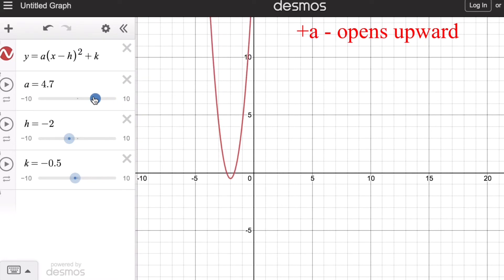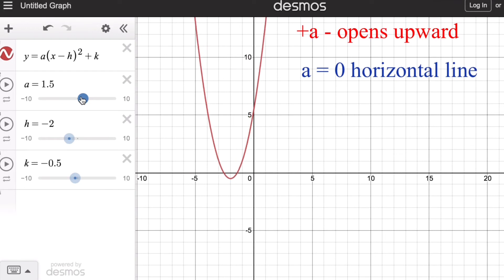On the other hand, if the value of a is zero, the graph becomes a horizontal line. If the value of a is negative, the graph opens downward.